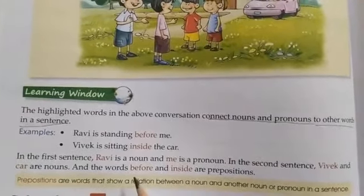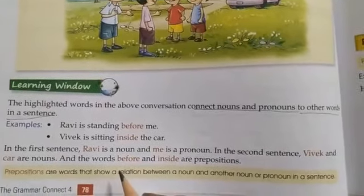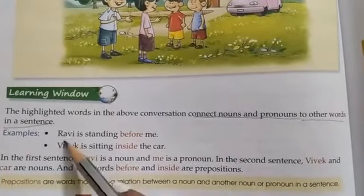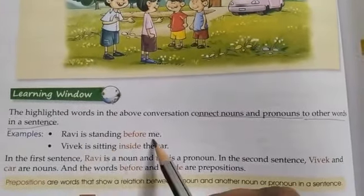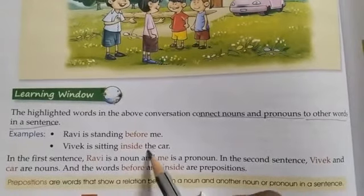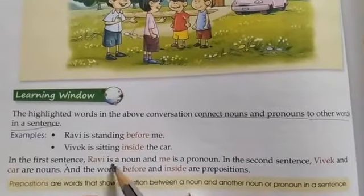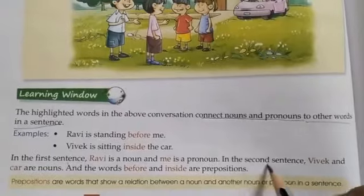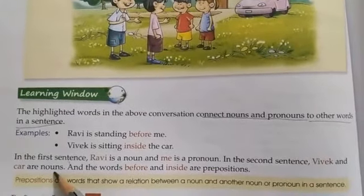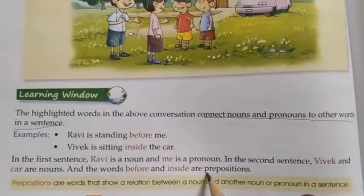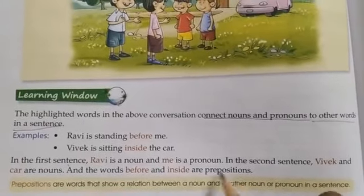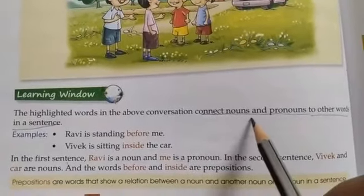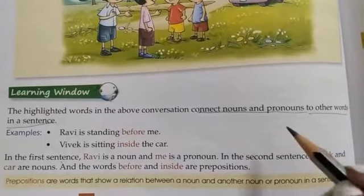These highlighted words are prepositions. So what is the work of a preposition? To connect nouns and pronouns to other words in a sentence. For example: Ravi is standing before me — Ravi is a noun and me is a pronoun. Vivek is sitting inside the car — Vivek and car are nouns. And the words 'before' and 'inside' are prepositions, showing a connection between nouns or pronouns.